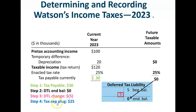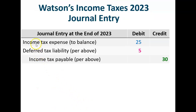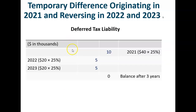Step four: plug the tax expense. Credit taxes payable $30,000, debit deferred tax liability $5,000 — so we debit tax expense $25,000. Journal entry: debit income tax expense $25,000, debit deferred tax liability $5,000, and credit income taxes payable $30,000. Notice that the deferred tax liability increased in 2021 when the temporary difference originated, then decreased in 2022 and 2023 as the temporary differences reversed, with a zero ending balance after year three.